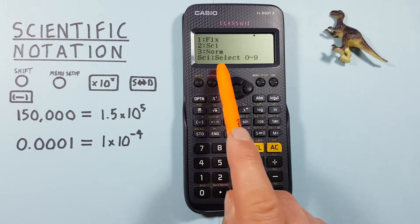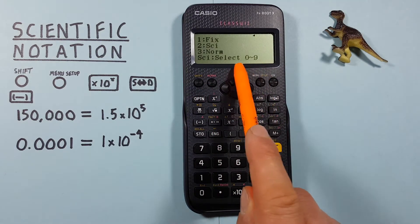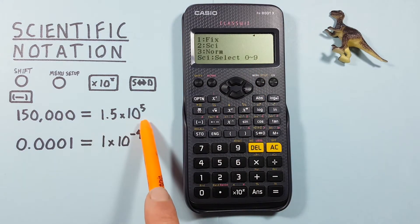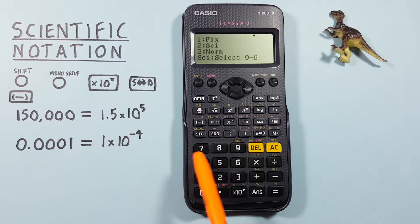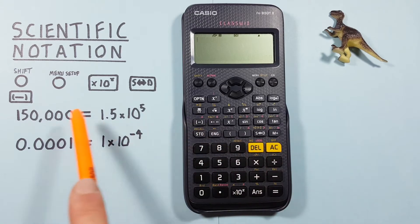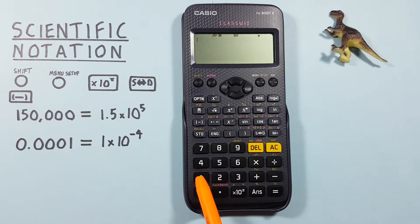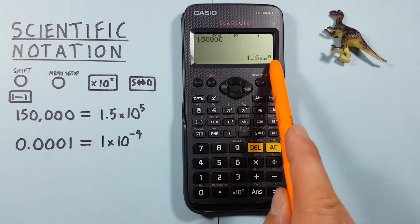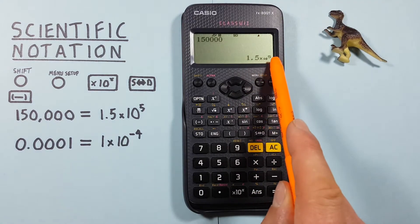It'll then ask us to select zero to nine - this is how many digits we want to appear. If we want two digits, we'll press 2. Now if we enter 150,000 and press equals, we see it appears as 1.5 times 10 to the power of 5.